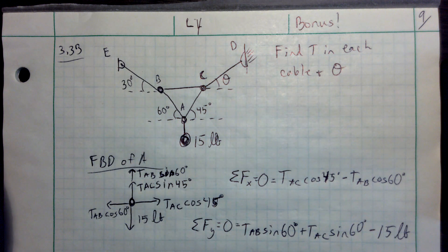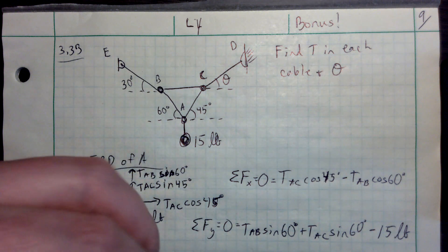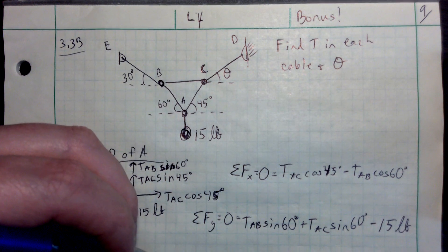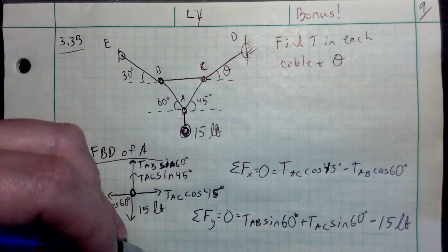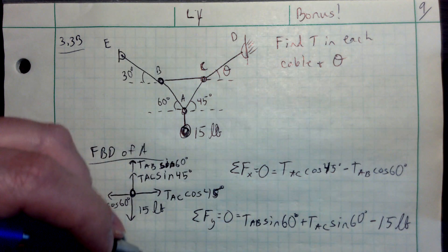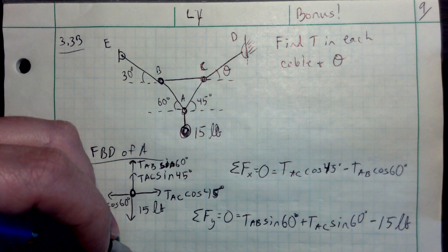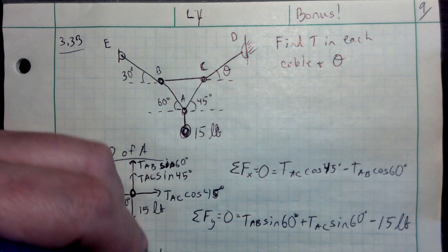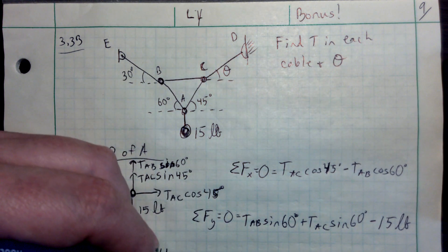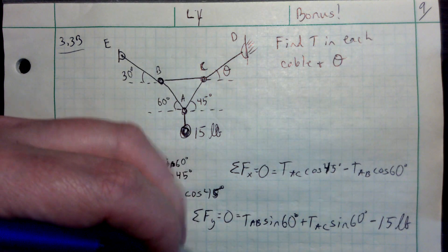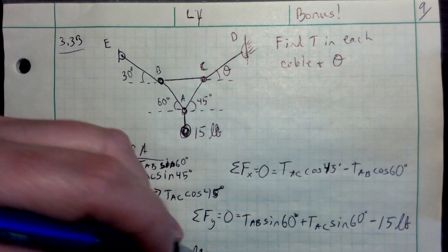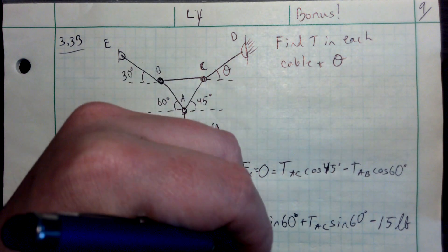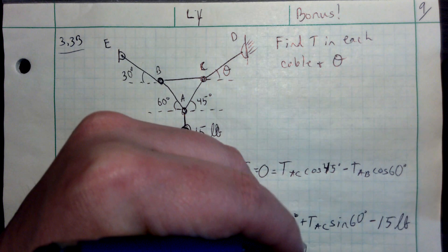Pause here if you want to do the algebra and the calculations. This is not super complicated algebra — I'm going to leave it to you to practice. I'm going to give you the answers: TAB is approximately 10.98, rounding to three significant figures gives TAB equals 11.0 pounds, and TAC comes out to 7.76 pounds.